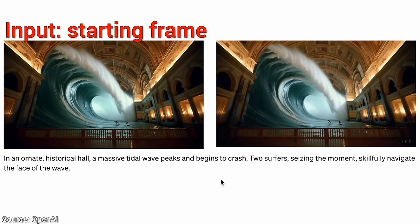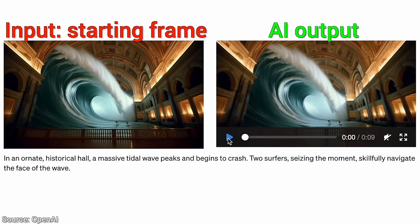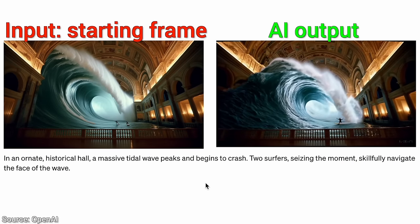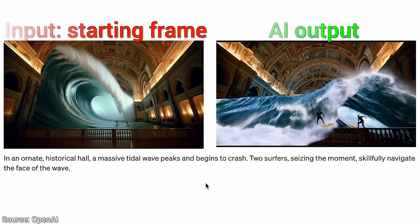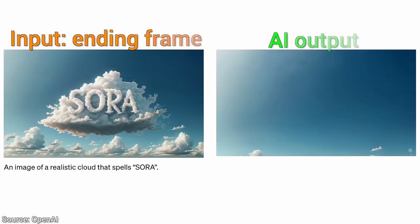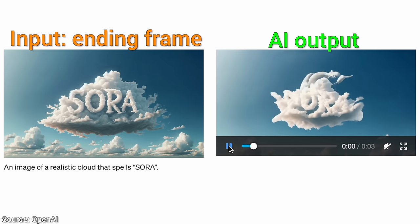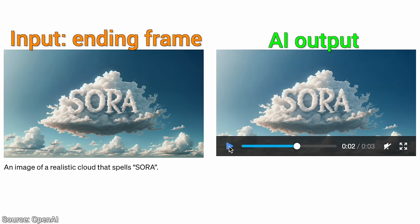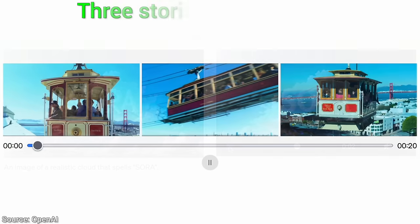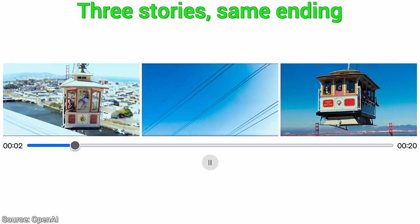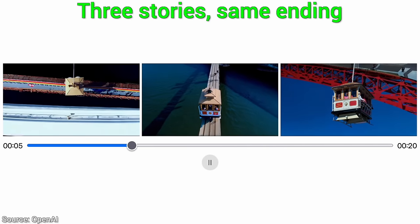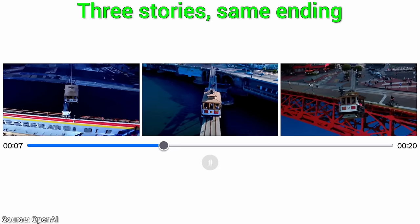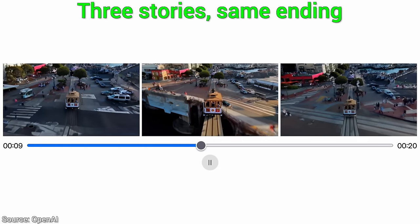We know that it can take a still image and extend it forward into a video. But get this — it can also do the same, but backward. And this one comes with a twist. We prescribe how the video should end, and it writes several possible ways of getting there. And they all feel completely natural to me. That is awesome! I love it!